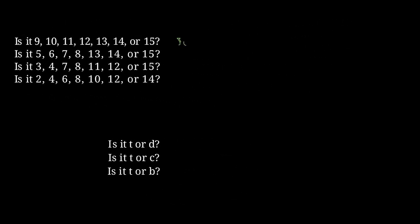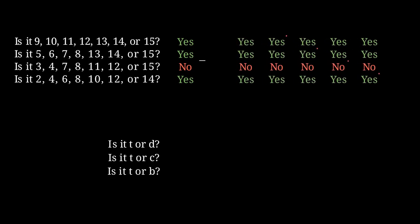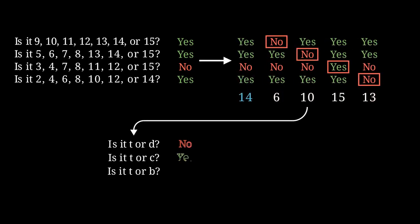Remember that the question duplication strategy from before guaranteed us a win in nine questions, so we've shaved off two questions from our total. This doesn't seem like much, but this is because a fifteen item category is quite small. So let's see what happens if we bump up the count.